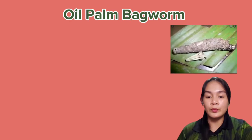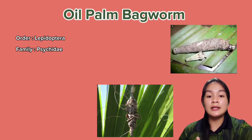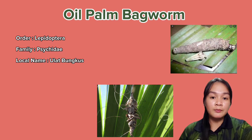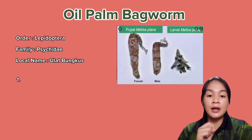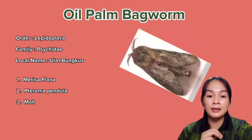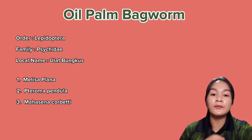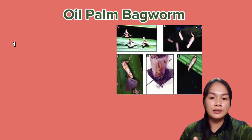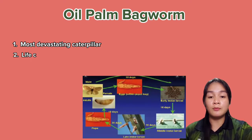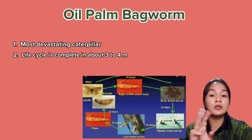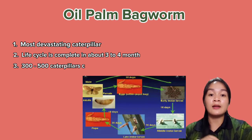The first crop pest is the oil palm bagworm, classified under Lepidoptera and the family Psychidae. The local name of this pest is ulat bungkus. The most important species are Metisa plana, Pteroma pendula, and Mahasena corbetti. It has been an oil palm pest in Malaysia since 1945 and became the most devastating caterpillar on oil palm. The biology or life cycle of this pest will complete its cycle in about three to four months, and 300 to 500 caterpillars have been found on a single frond.